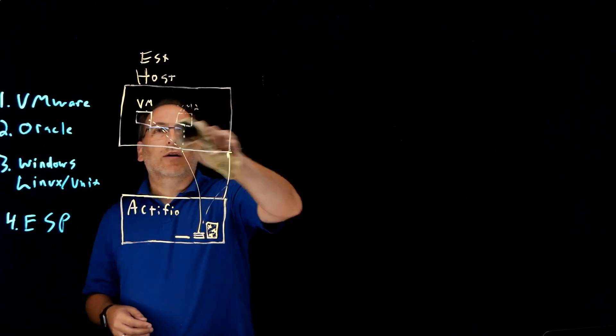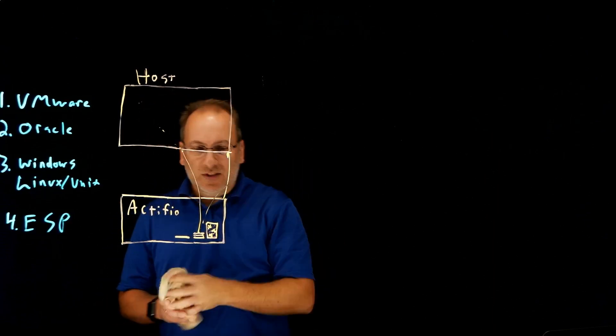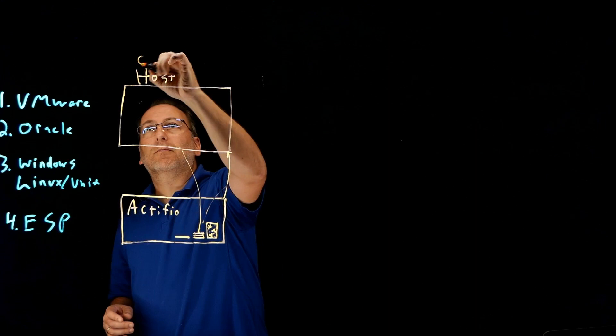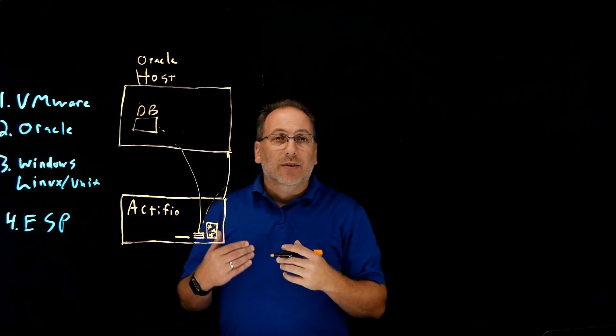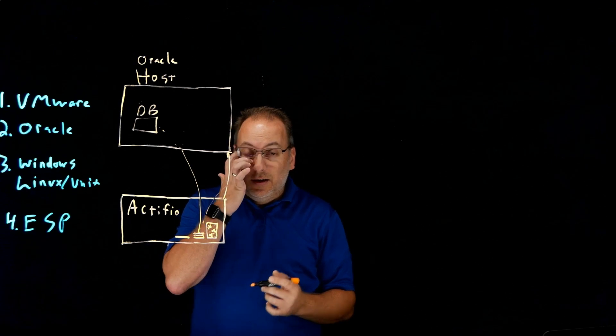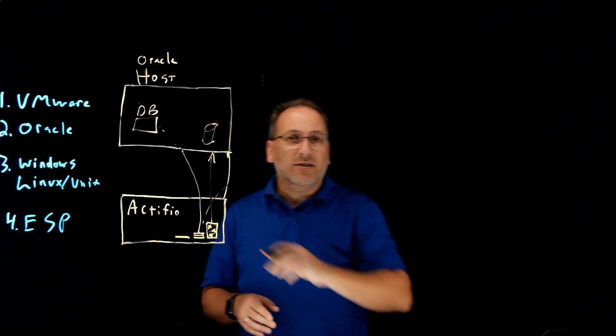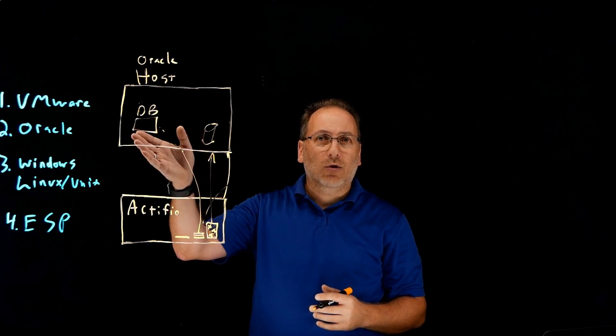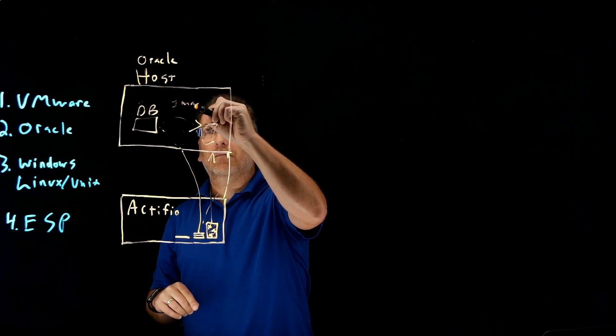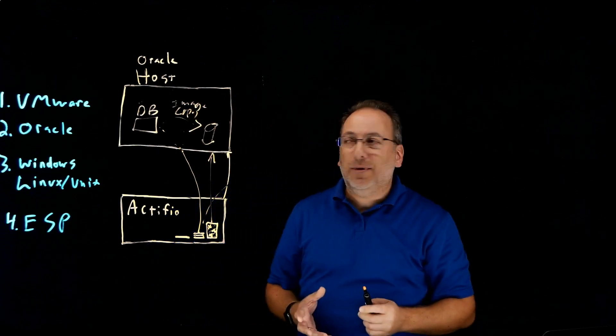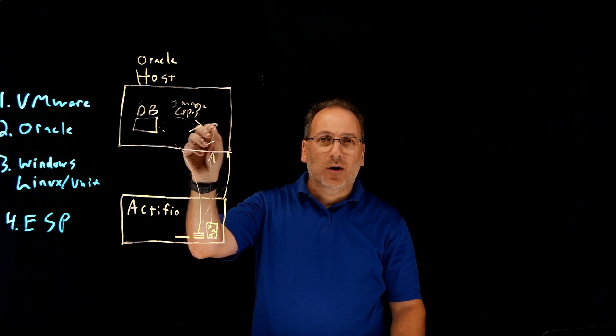Now when we move beyond VMware and look at Oracle, Oracle is similar to VMware in that it gives us some things automatically. For Oracle, we might have a database instead of a VM. The capture process for Oracle is a little bit different than VMware because what we actually do is we present up a disk that's been carved out from the Actifio solution that's big enough to hold our Oracle database. And then we instruct through RMAN to do an image copy.